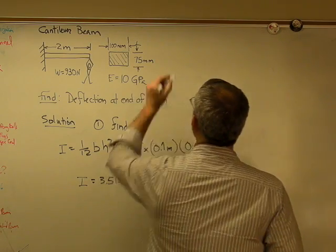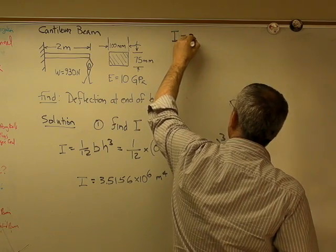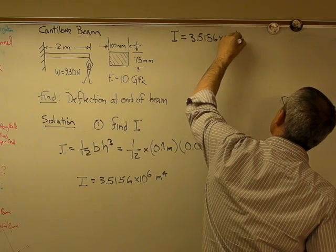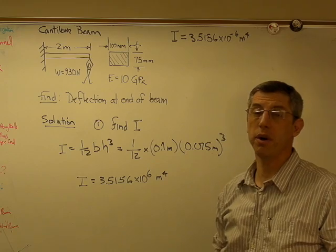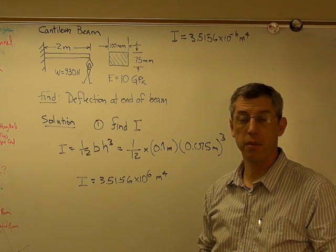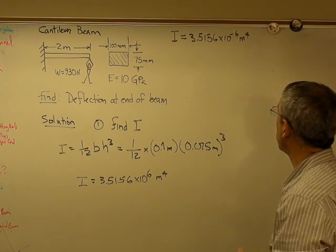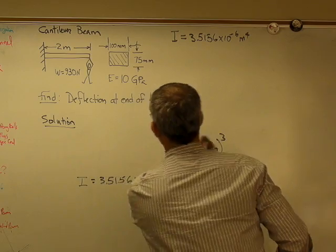So we've got that. I'm going to write I up here because we're going to need this space in a second. 3.5156 times 10 to the minus 6 meters to the 4th. Now that's a really small number, and the reason that's a really small number is we're multiplying by meters to the 4th. And a meter's a big distance. Meter's this long. So that's probably correct. We don't need to worry about that. Found I.